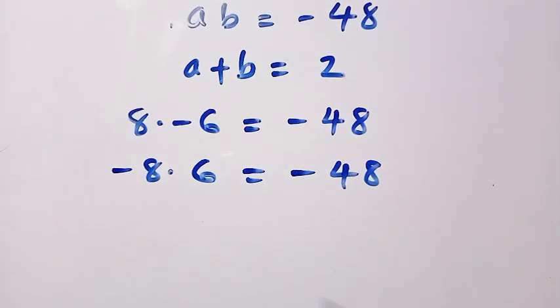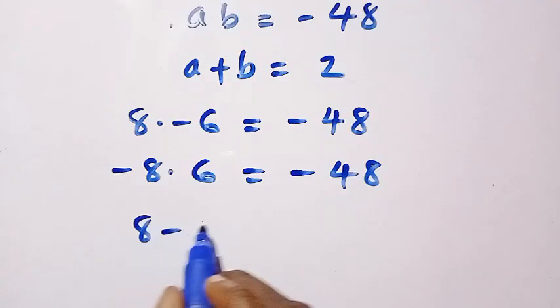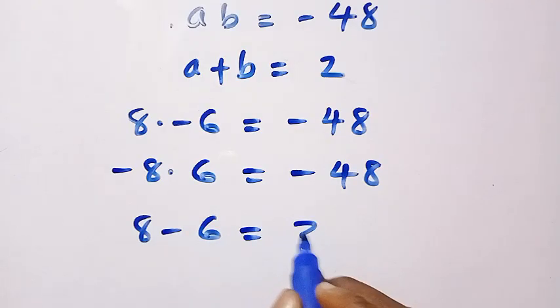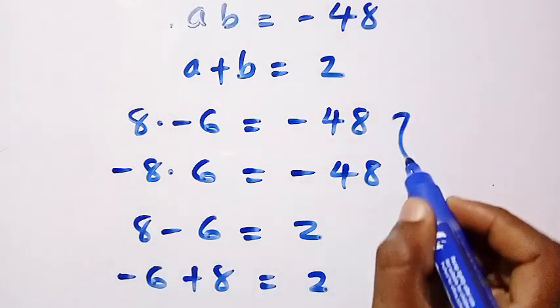And again for the sum which is equation 2, we are going to have 8 minus 6, that is 2, is correct. And also we have minus 6 plus 8, that is 2. All these are correct for both pairs of a and b, for a1 b1 and a2 b2.